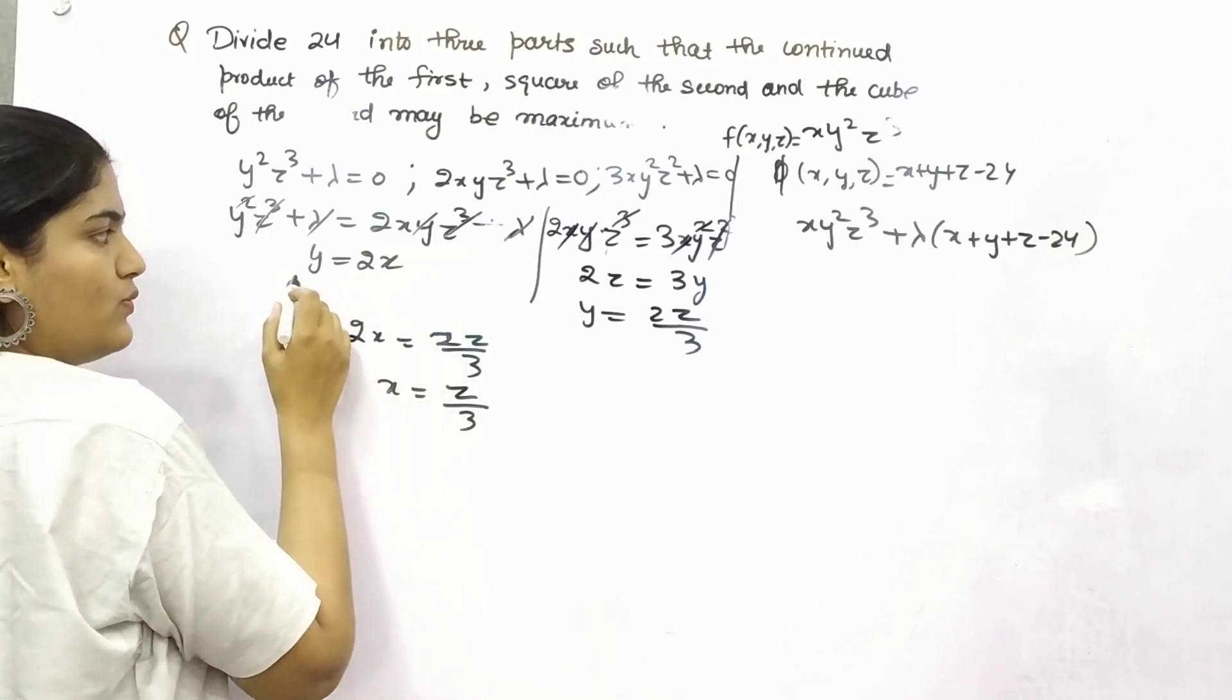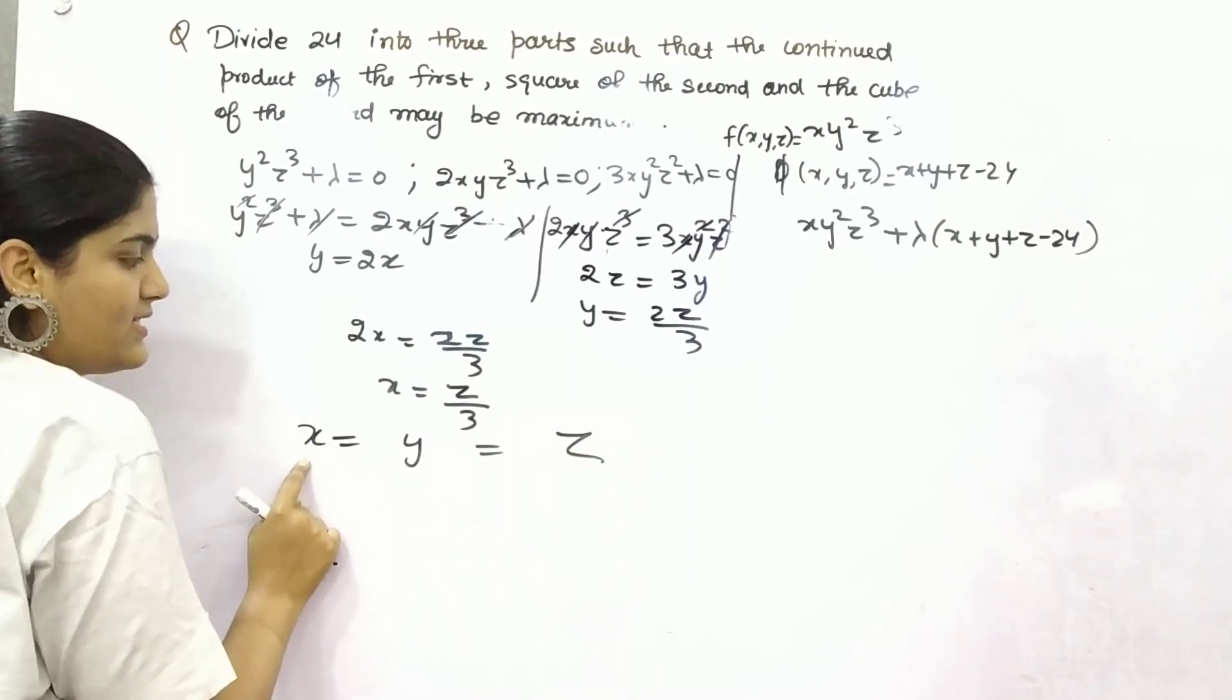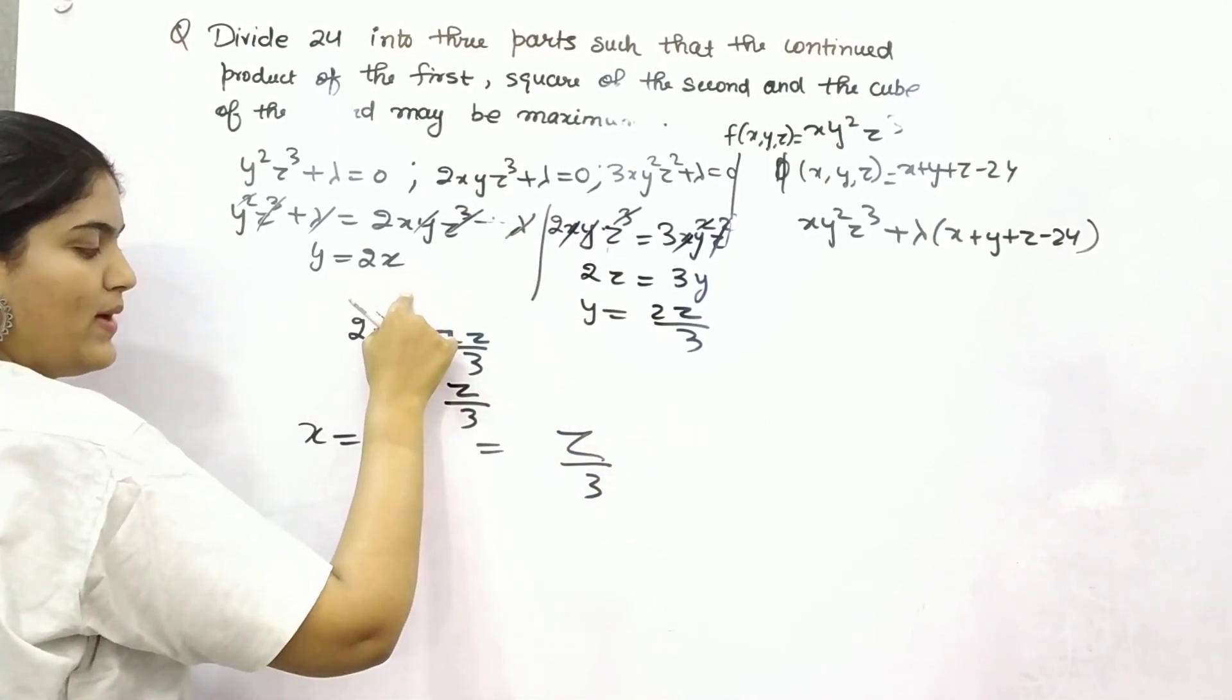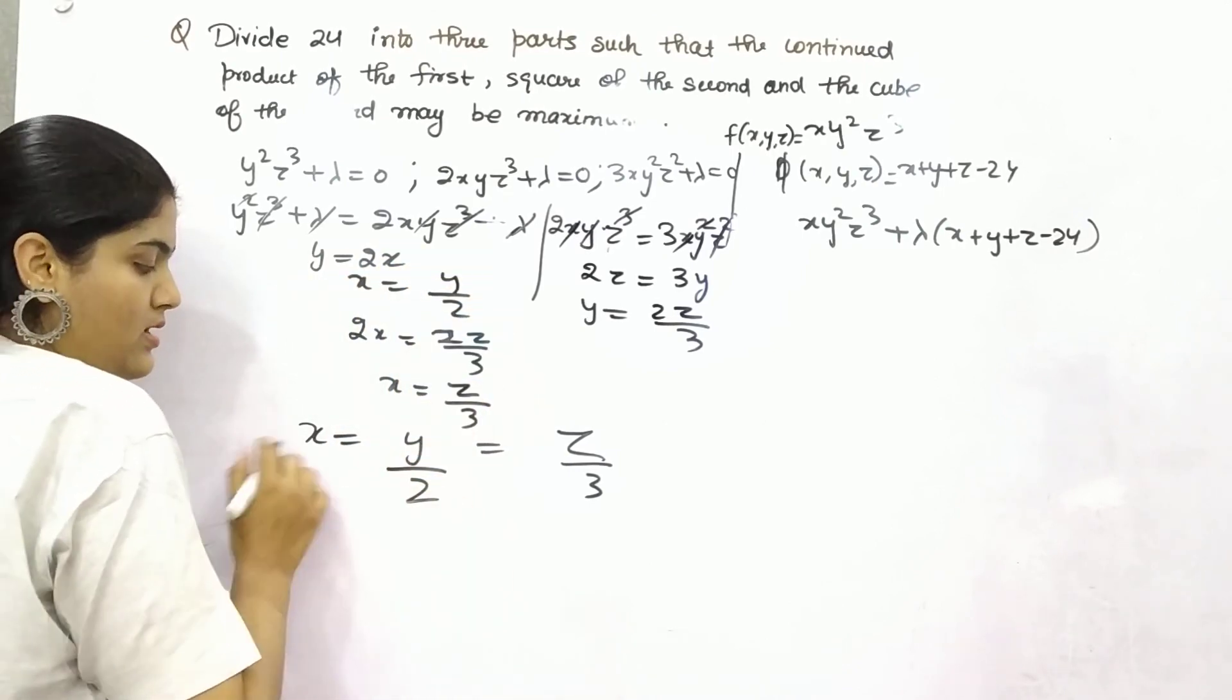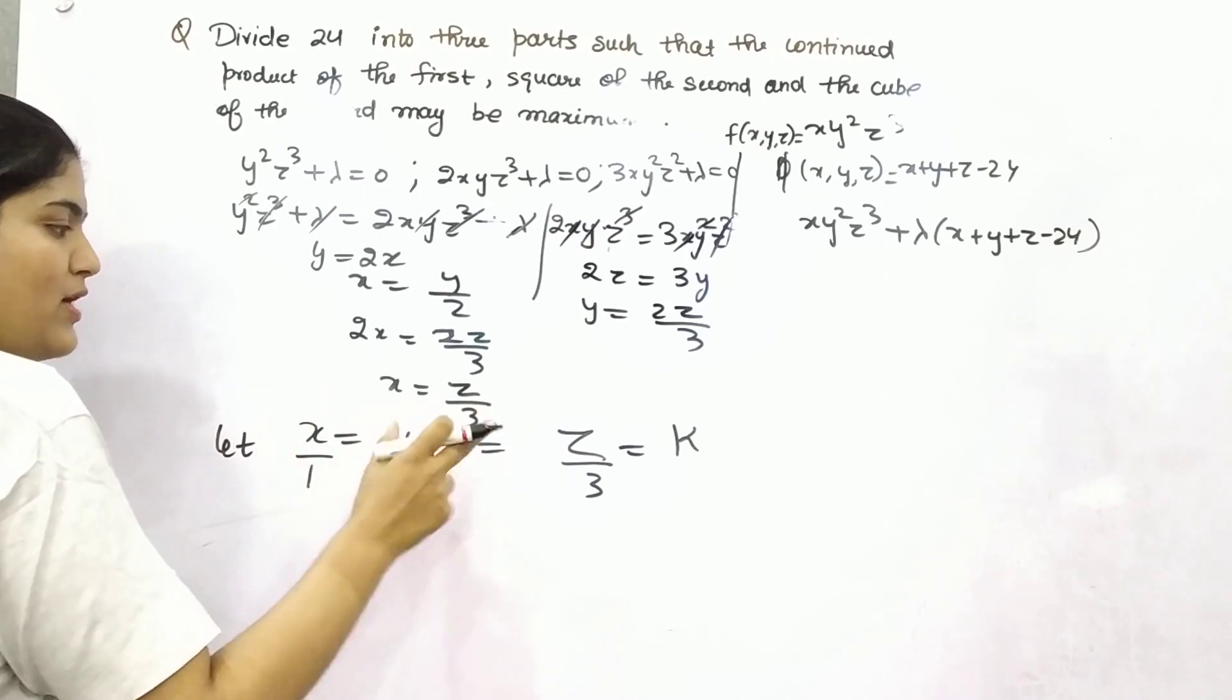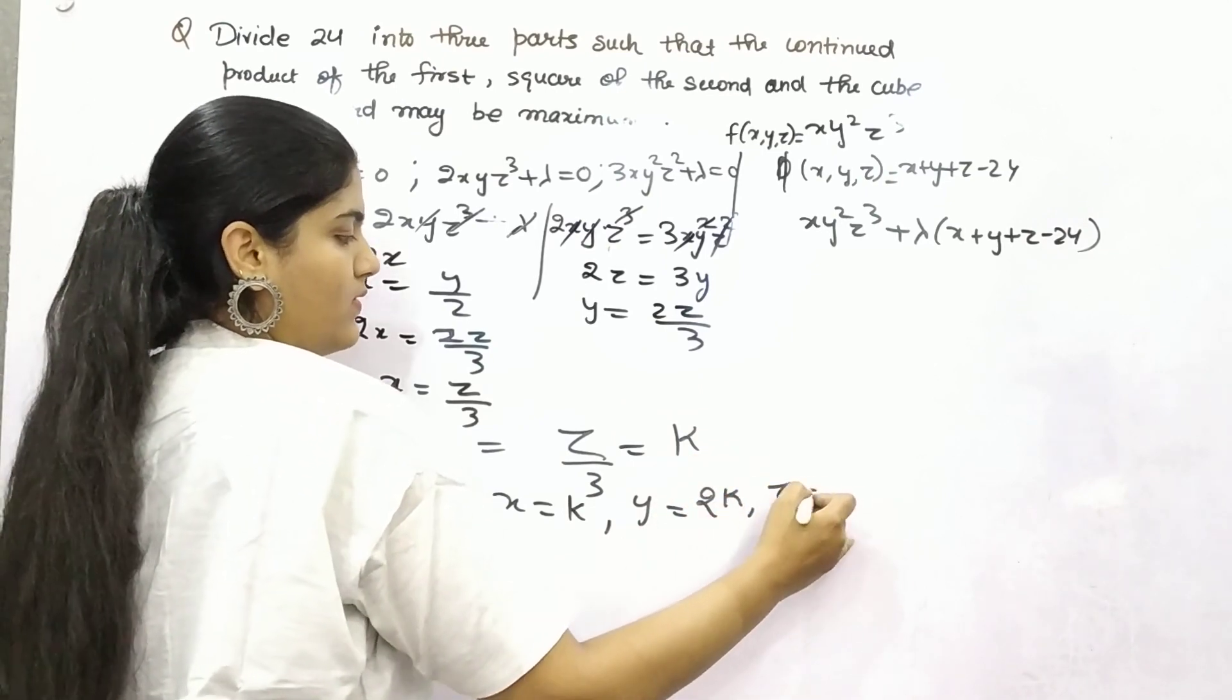From here, x is y by 2. So if you substitute as in x, y, and z form, your x is z by 3, your y is 2z by 3, or you can say your y is 2x, so x will be y by 2. This is your equation form. Put it as k. Let this be equal to k. So your x will be k, y will be 2k, and z will be 3k.